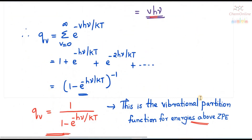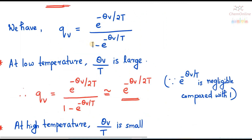So we have two different forms of vibrational partition function: the first includes the zero point energy, and the second is for energies above the zero point energy. Writing in terms of θ_v, q_v equals e raised to minus θ_v/2T divided by (1 − e raised to minus θ_v/kT). At very low temperatures, θ_v/kT is large, so e raised to minus θ_v/kT in the denominator is very small compared to 1, and the equation reduces to approximately e raised to minus θ_v/2T.